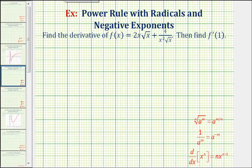But before we find our derivative, we need to recognize two things. First, we need to rewrite the square roots using rational exponents. And then second, we need to rewrite these terms so we have x raised to some power so we can apply the power rule of differentiation.